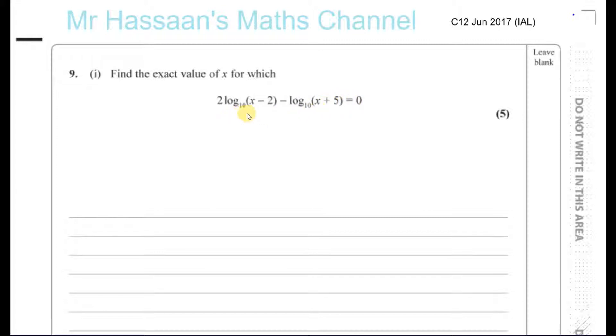One point here is they could have written this question without saying the 10, because if you have 2 log (x minus 2) and there's nothing written in the base, it means log to the base 10. So it's possible for them to have written that without the 10 there and it means the same thing. When there's nothing written, we assume it's a 10. That's the general procedure.